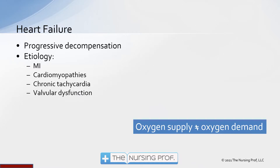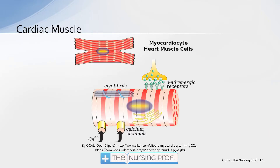Let's talk about what heart failure is and then the pathophysiology. Heart failure is a progressive decompensation in cardiac function, often as a result of a myocardial infarction, maybe a cardiomyopathy — which is a change in the shape of the heart usually as a result of hypertrophy — chronic tachycardia, or valvular dysfunction. Basically, there is an imbalance between oxygen supply and oxygen demand to the heart muscle, and that results in progressive decompensation in function.